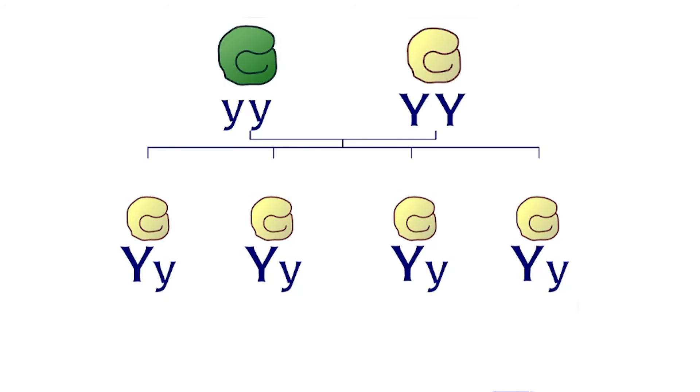The green allele didn't disappear. Peas are yellow as they have either two yellow alleles or one yellow allele and one green allele. Green peas must have two copies of the recessive green allele.